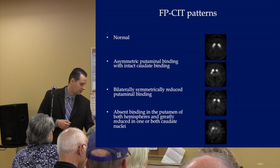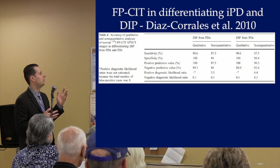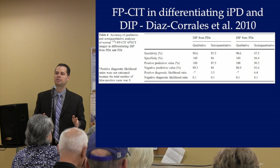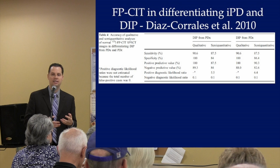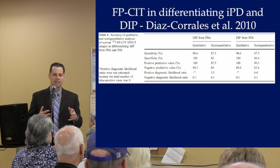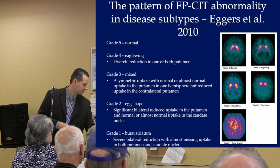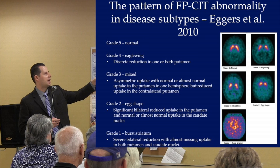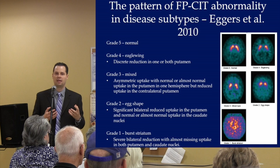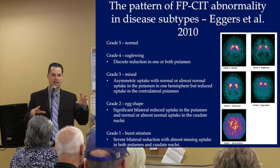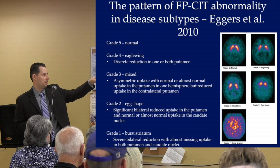When the DAT scan was being studied for FDA approval, experts reading it had very high sensitivity and specificity. However, a 2010 study using 30 nuclear medicine physicians with some experience and 12 scans pulled from a database of 300-400 to cover the full range showed very wide variability in agreement. In one case, agreement was only 30-39%. 100% agreement occurred in only three of the twelve cases. This tells us that just because someone can do the test doesn't mean they can read it correctly.